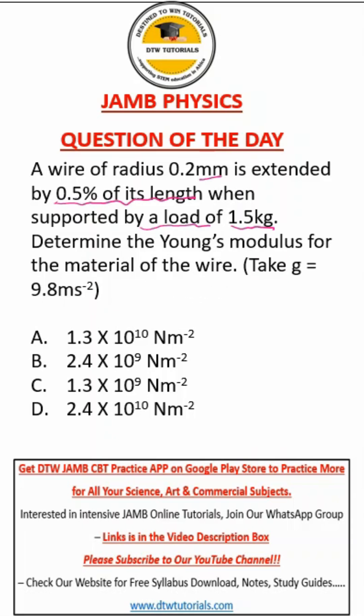Determine the Young's modulus for the material of the wire. Take g as 9.8 meters per second squared. So we have to determine the Young's modulus.